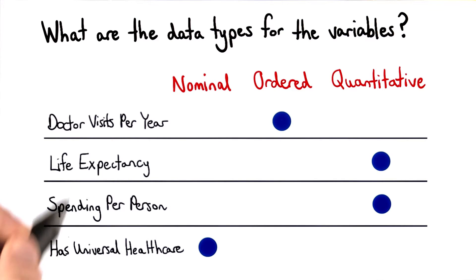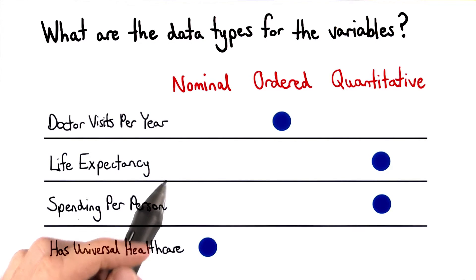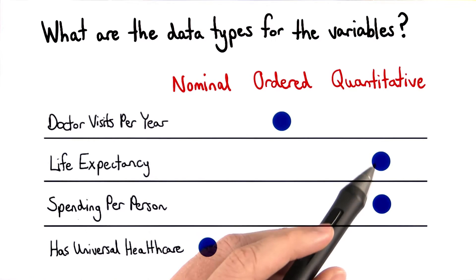Here were the correct answers. Doctor visits per year is an ordered data type. Life expectancy and spending per person are both quantitative data types. And has universal health care is a nominal data type.